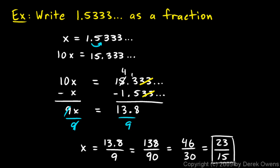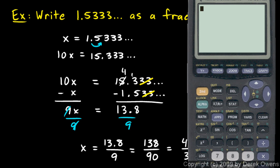And if I check that on the calculator, if I do 23 divided by 15, I should get 1.53, and then the 3's repeat. So let's try that. 23 divided by 15, and there it is, 1.53333, and so on.